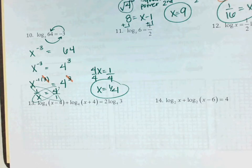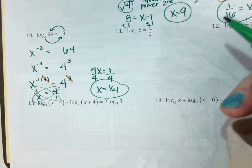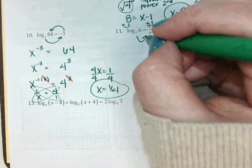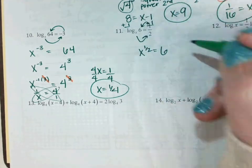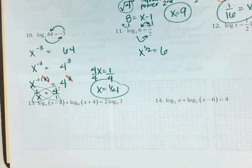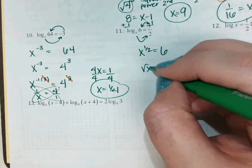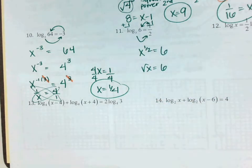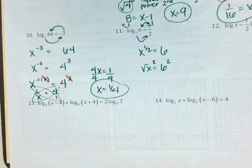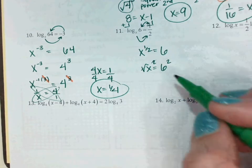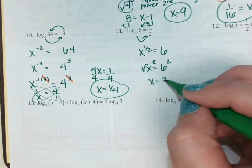Take a look at number 11 — loop it. We get x to the 1-half, bring it back around, equals 6. What is 1-half the same as? Square root. So if the square root of x equals 6, how do I solve? Square both sides. When I square a square root, they cross out — x equals 6 squared, which is 36.